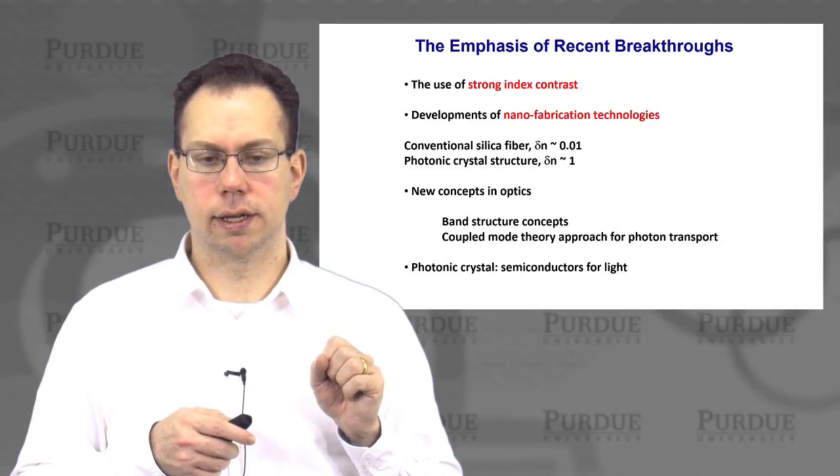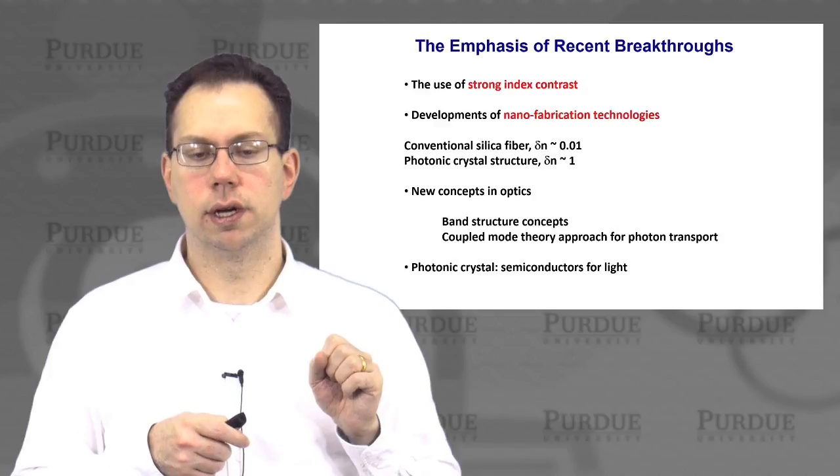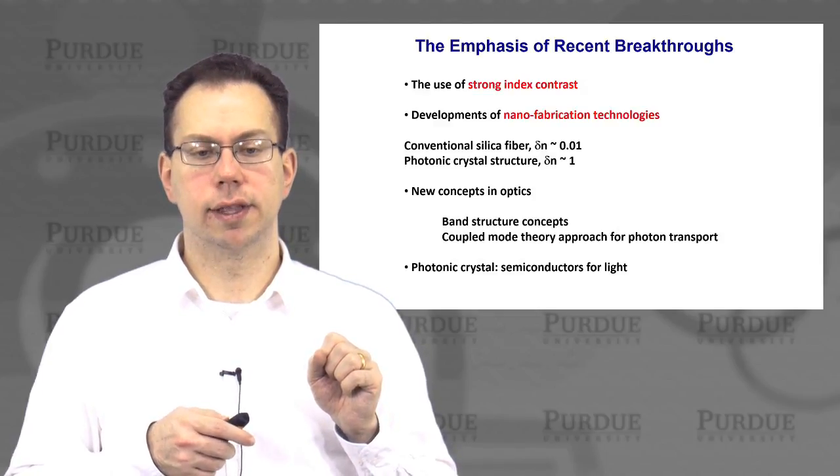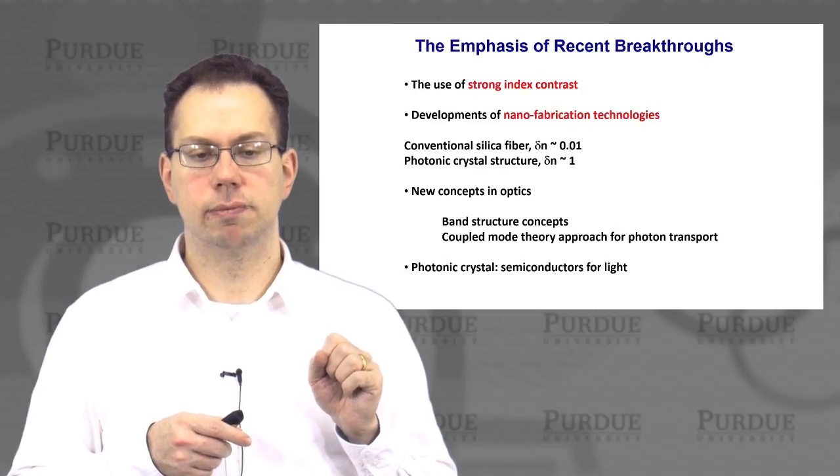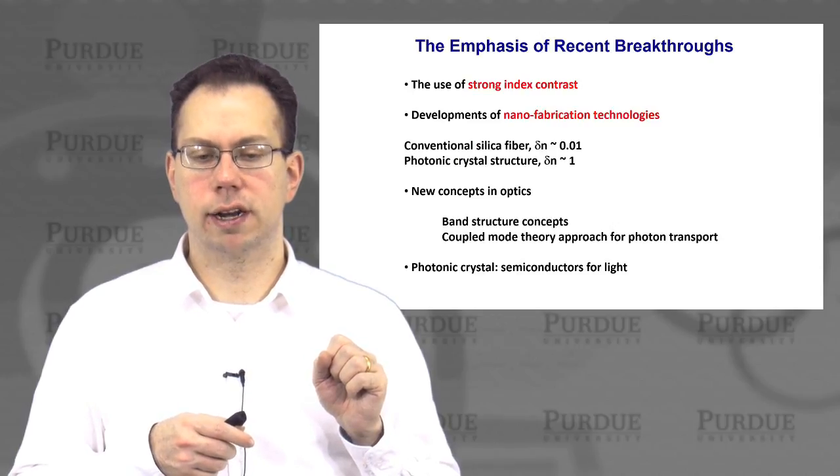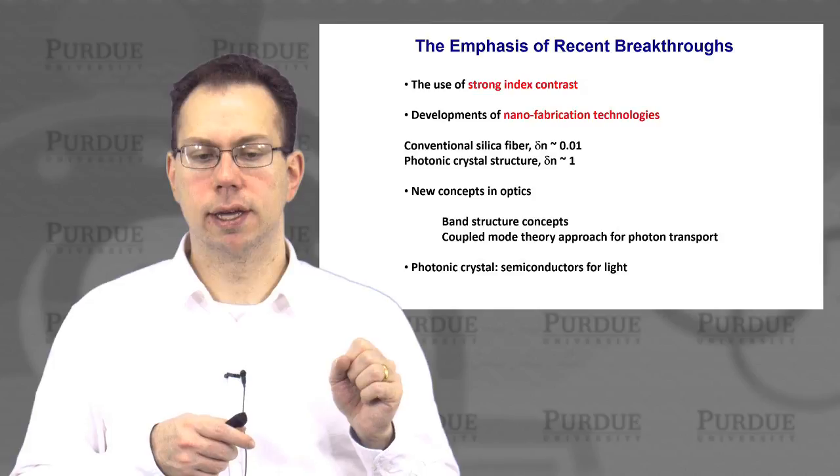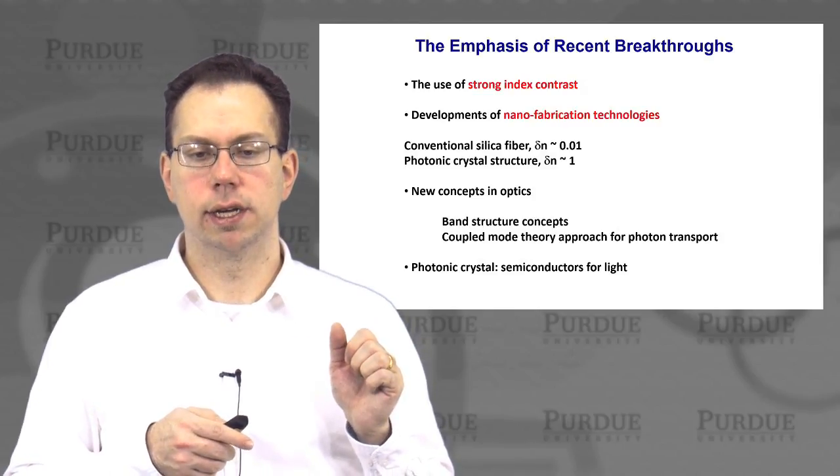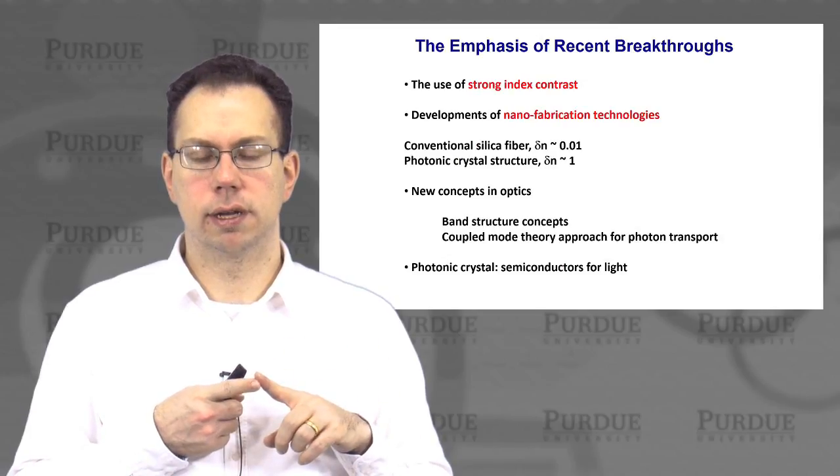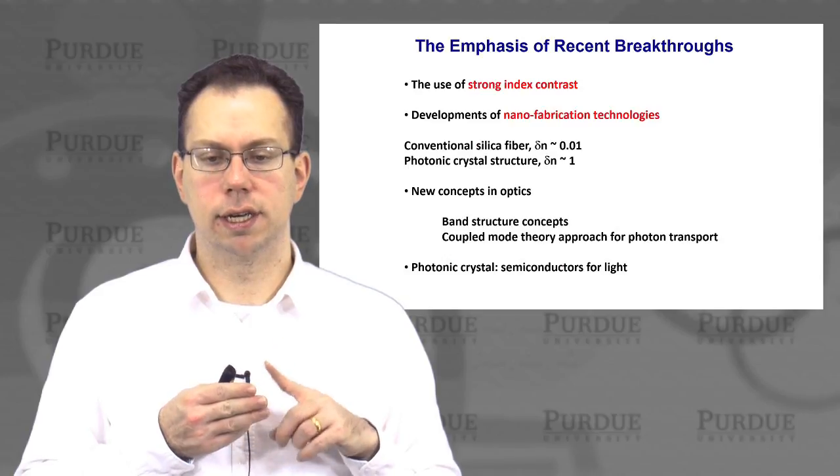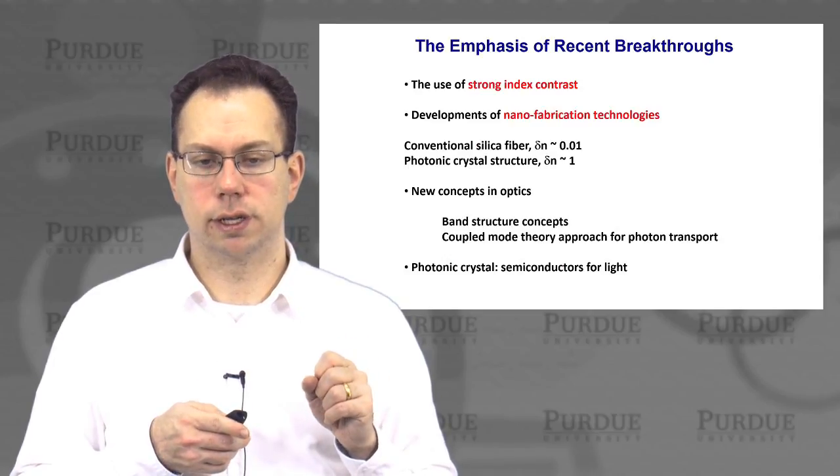But I think the easiest way to remember this is that it's a new type of material, which is like a semiconductor for light. So that means that you have the potential to use even relatively well-established nanofabrication concepts to make a completely new set of materials and structures that can be lower cost and higher manufacturability as well as lower power potentially than before.